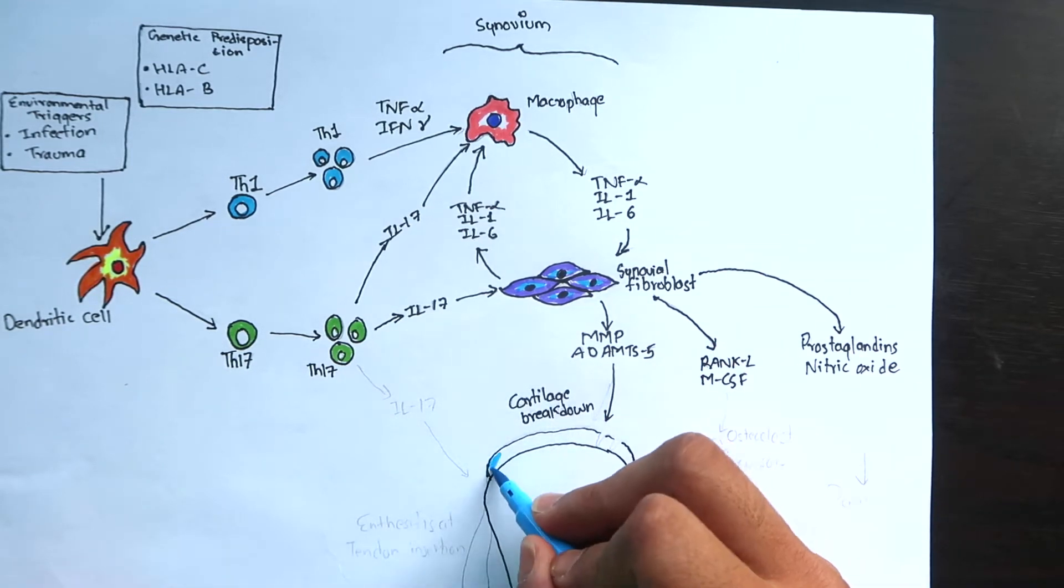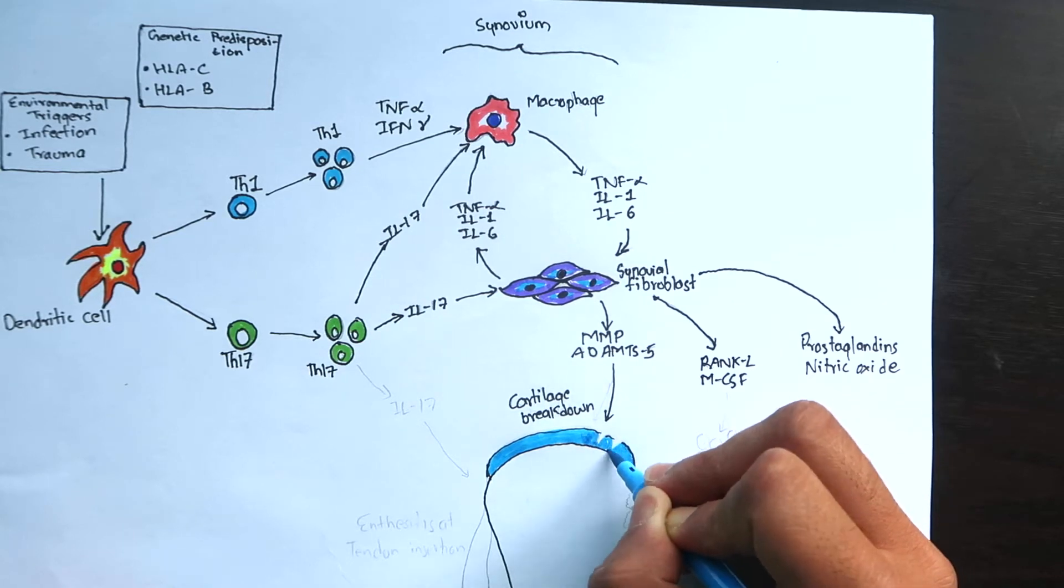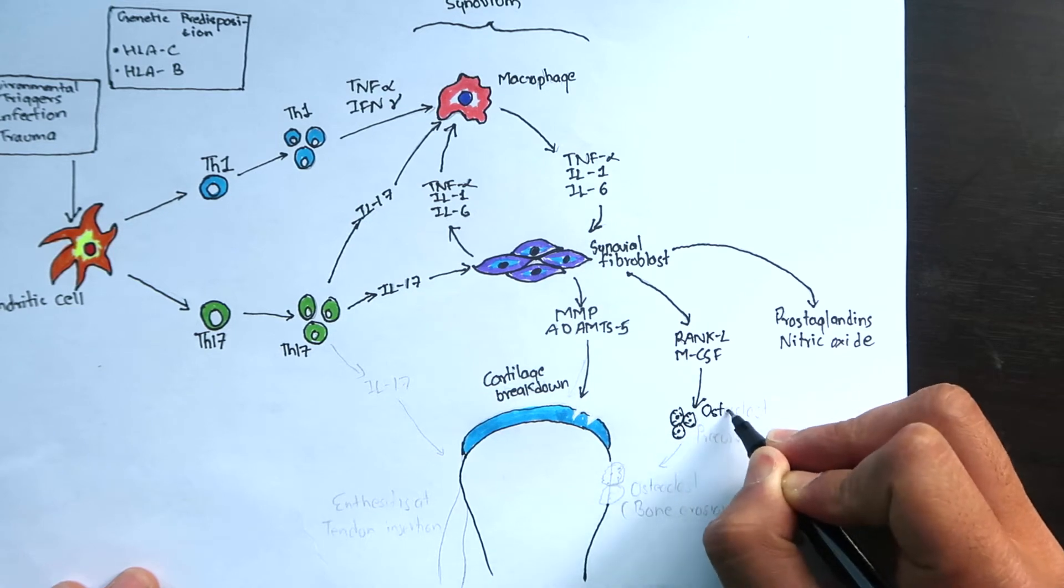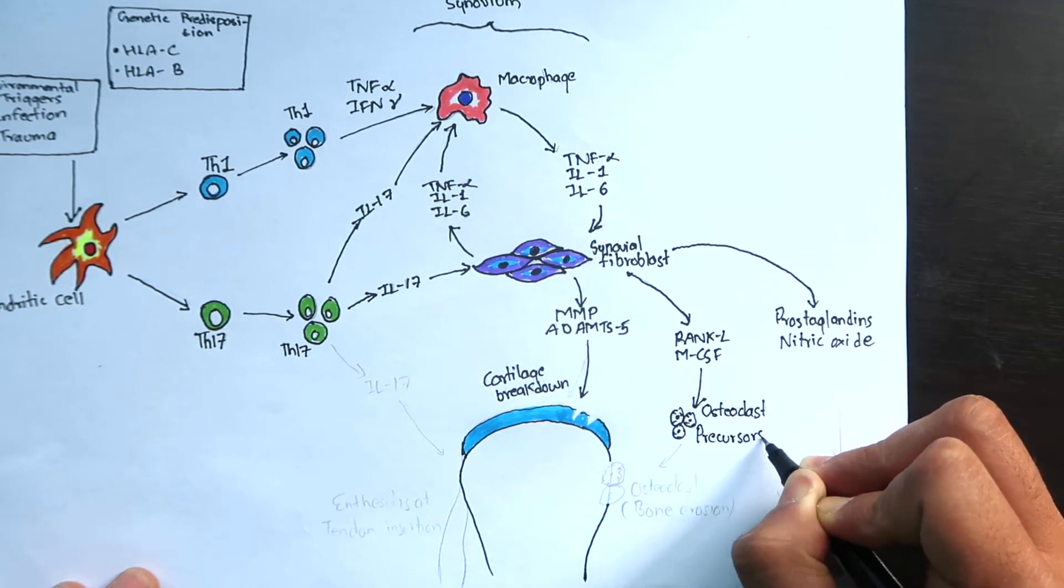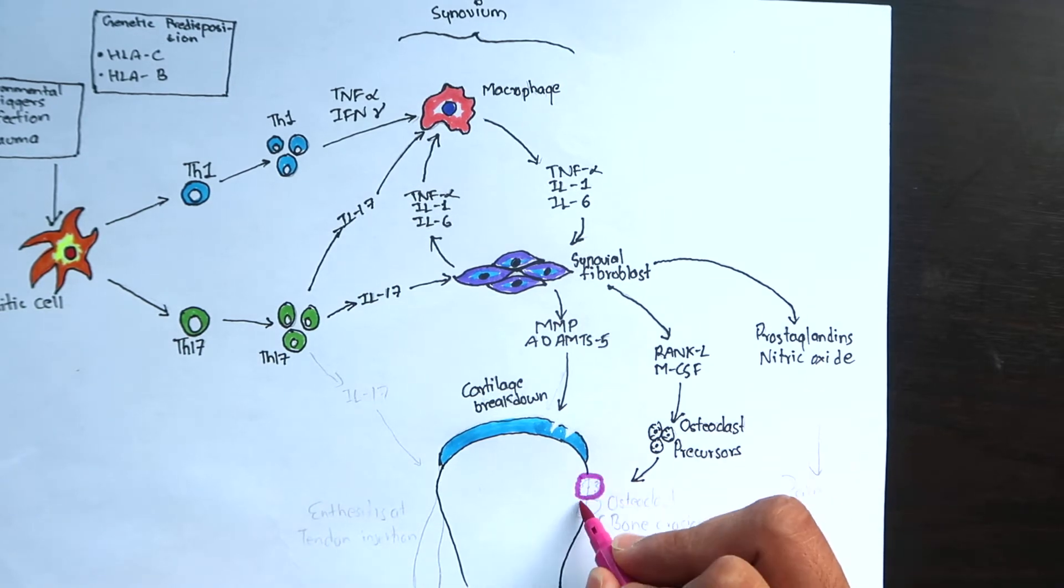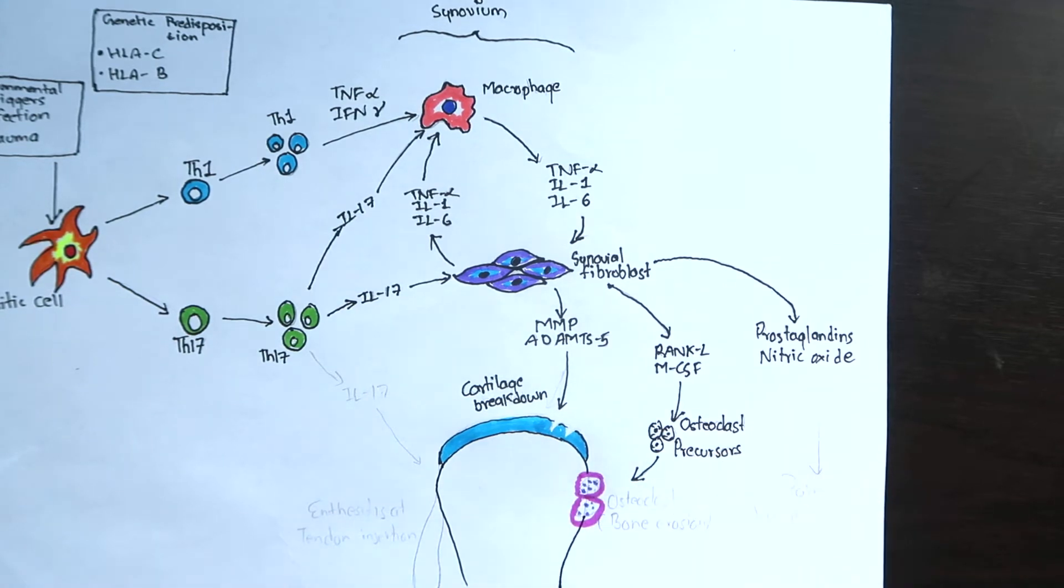The matrix metalloproteinase and agrikinase can destroy the articular cartilages. The rank ligand and macrophage colony stimulating factor will activate the osteoclast precursor cells which will fuse together to form multinucleated giant cells called osteoclasts. An osteoclast causes bone erosion.